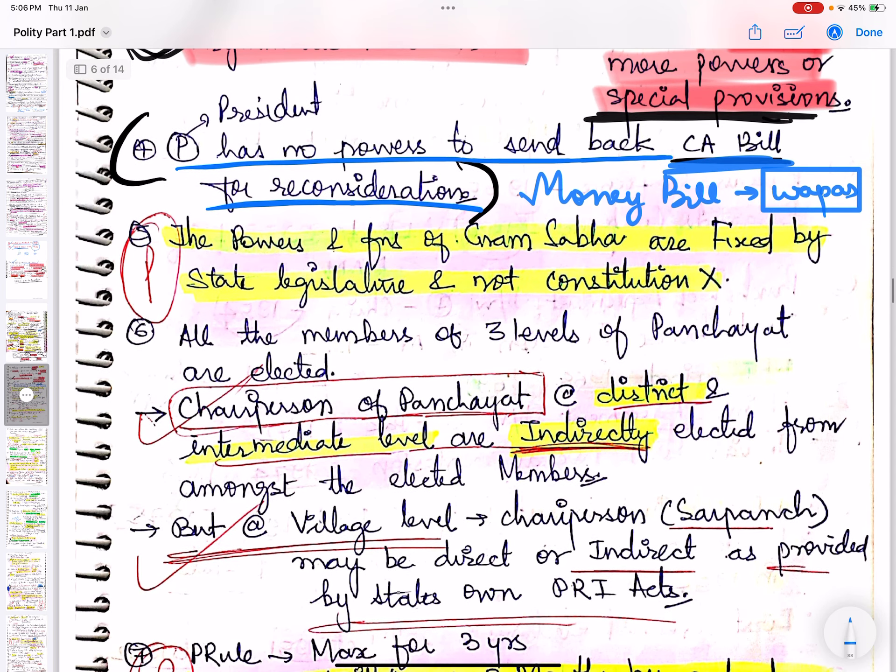Next, the power and function of the Gram Sabha are fixed by the state legislature and not the Constitution. Please remember this. This is why you will find Gram Sabha is not a very powerful body, because the power is in the state's hands.